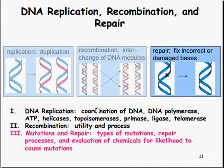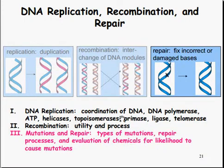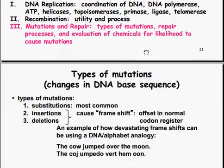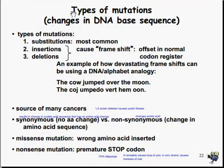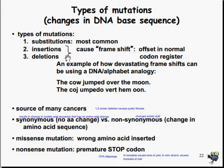Moving on to DNA repair, which is the fixing of incorrect or damaged bases. There are several types of mutations, several repair processes, and chemicals that cause mutations. A quick overview: mutations cause changes in the DNA base sequence. There's substitution, which is the most common. There are insertions and deletions, which cause a frame shift — an offset of the normal codon register, so everything moves over. Frame shifts can be very dangerous to DNA.